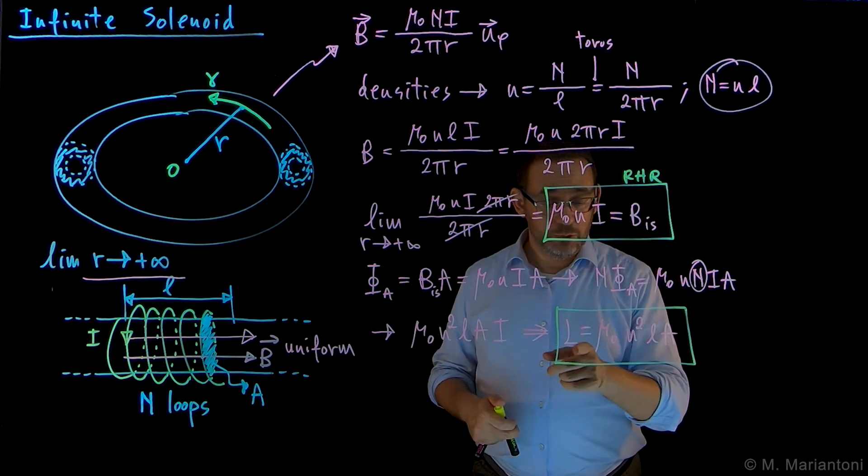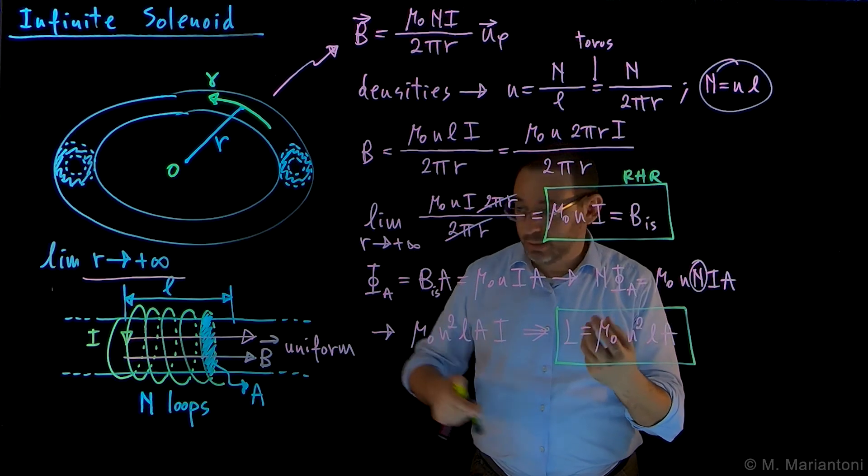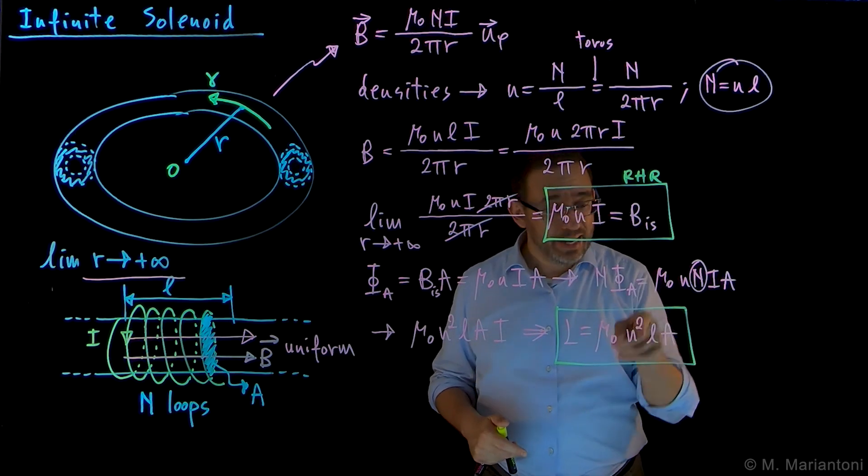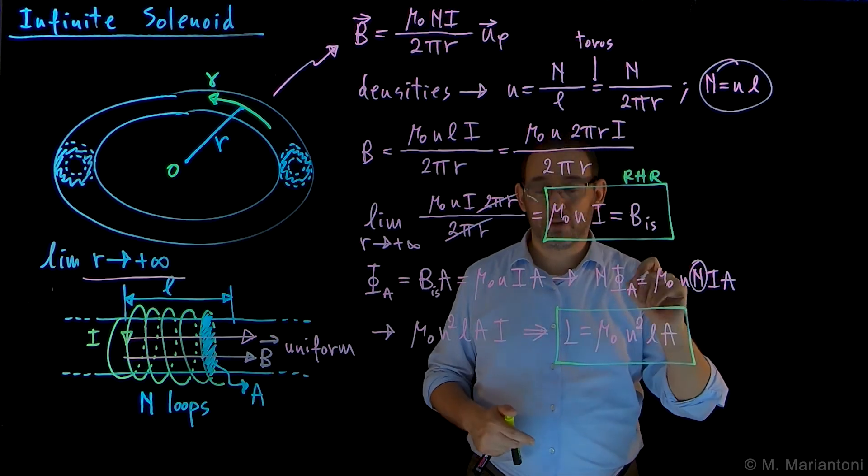It is equal to mu_0 small n squared, so the density of turns of this coil per unit length, times the length of the solenoid I'm considering, times the cross-sectional area.